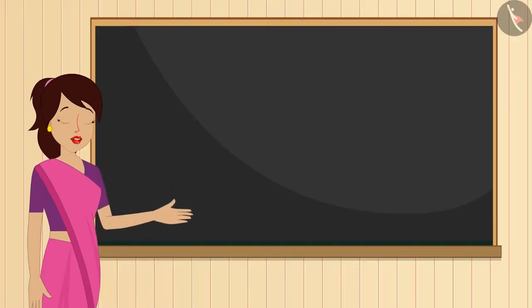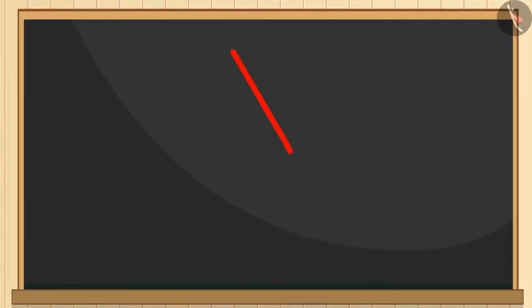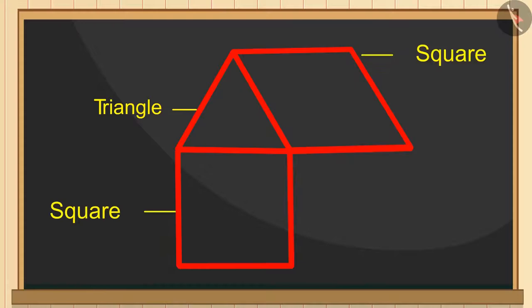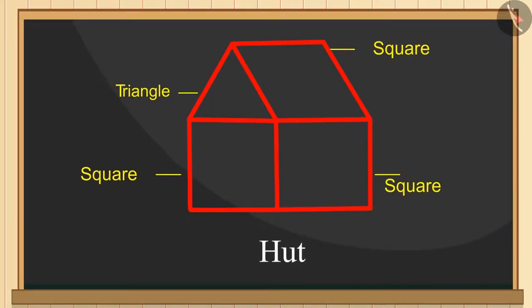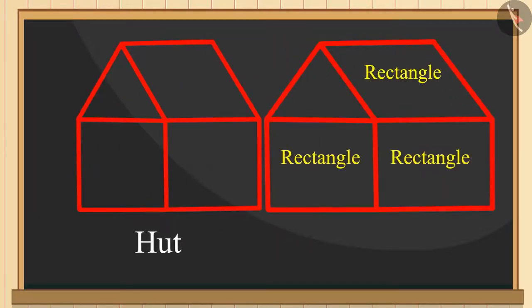Teacher, now let us draw a hut. Hey that is very easy. The front part of the hut's roof can be made with a triangle and the side wall of its roof with a square, and then we will use square to make the walls of the hut something like this. See here is the picture. Yes, one more thing, we can also make the walls of the hut with a rectangle.